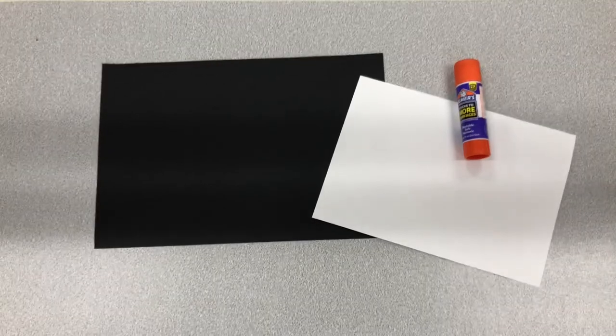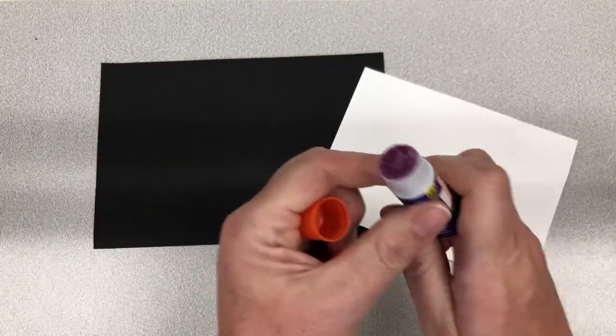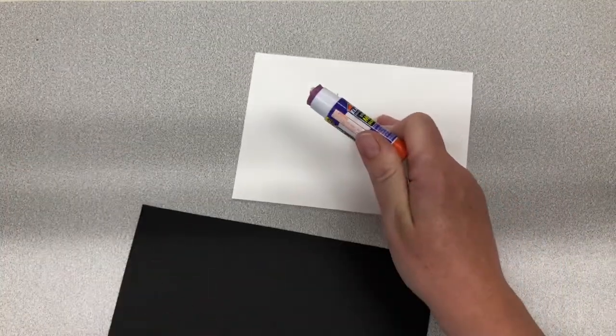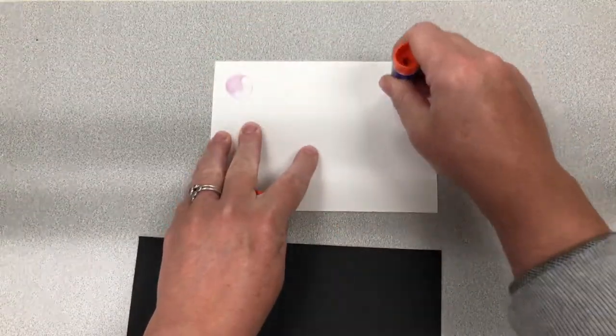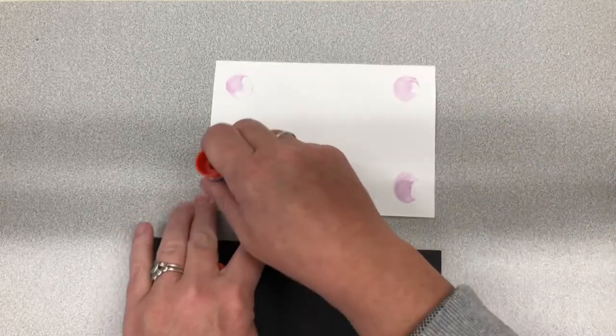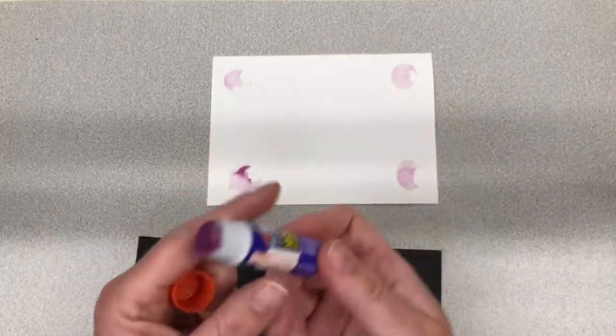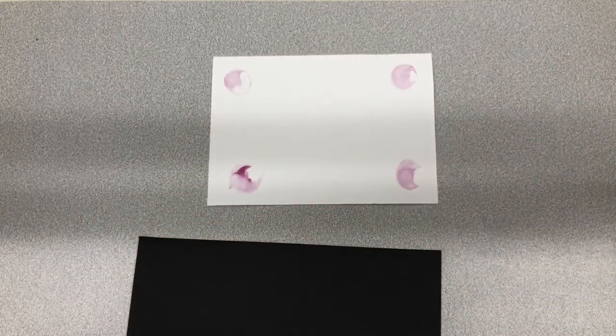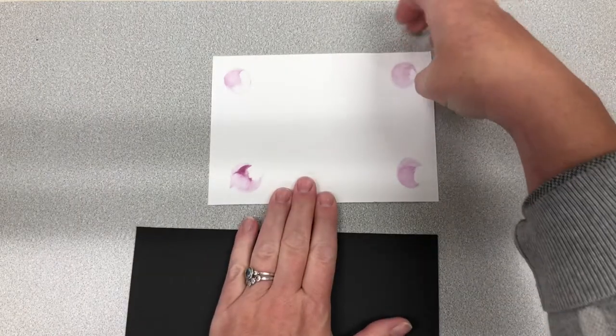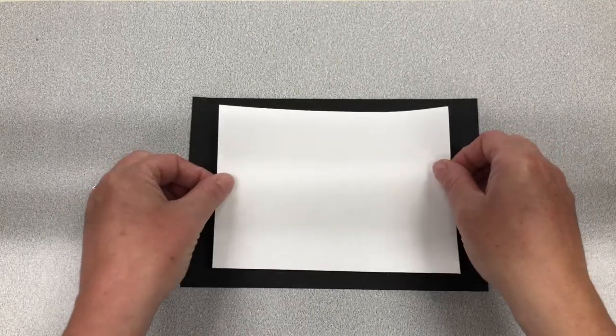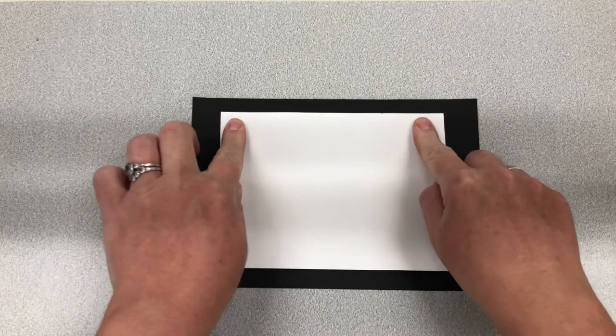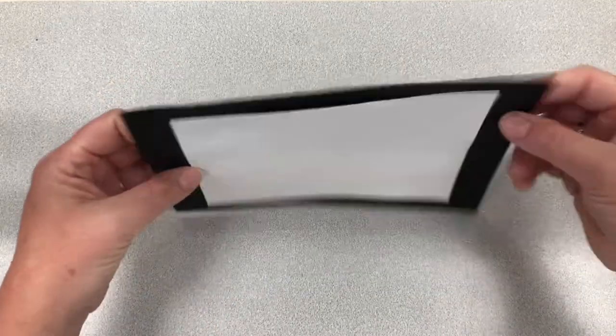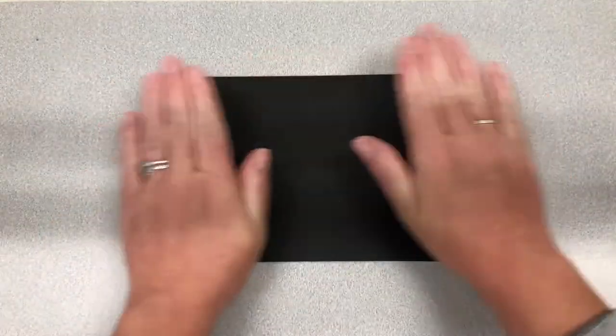First, take your glue stick and put four circles of glue in each corner of the paper. You want a lot of glue so your white paper sticks to your black paper. Now we're going to flip this and center it in the black paper. Press your four corners, then flip your paper over and smooth the back.